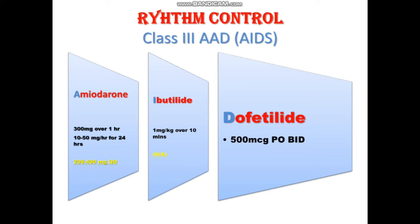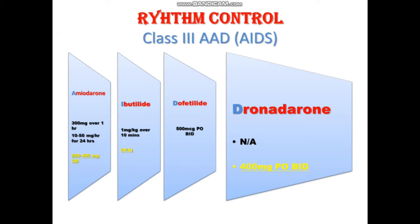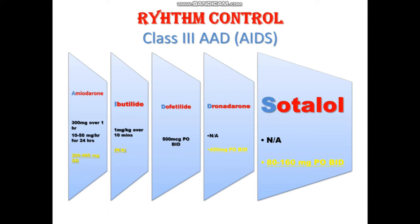Dofetilide has the same loading and maintenance dose: 500 micrograms BID given orally. Another class 3 antiarrhythmic drug for rhythm control is dronedarone. The loading dose for conversion to sinus rhythm is not well established, but the maintenance dose is 400 mg BID. The last class 3 drug is sotalol, which is also a beta blocker. Its loading dose is also not established, but the maintenance dose is 80 to 160 mg BID given orally.